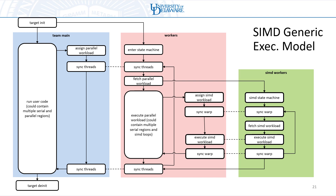Building on that earlier generic execution model for teams and parallel, we're adding an additional level to accommodate SIMD. Everything on the left side of the diagram is the same as before: all threads enter target initialization and branch into two paths depending on whether they are the team main thread or a worker. But now we include a second divergence point: when a parallel region is encountered at the fetch-parallel-workload section, there is an additional branch — if you're a SIMD leader you continue and execute that parallel region normally; if you're a SIMD worker you go into a new state machine and become idle again.